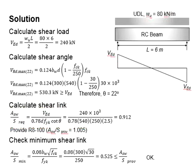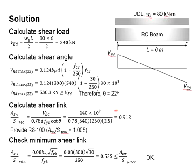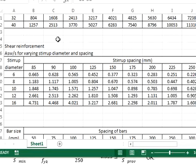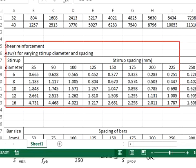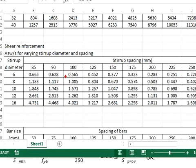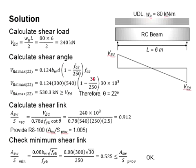Next, you calculate the shear link. Substituting the relevant values into the equation, you will get the shear link ratio Asw/s to be 0.912. Referring to the shear link table, you look for a value greater than 0.912; in this case you provide R8 at 100 mm spacing. The provided shear link value is equal to 1.005.